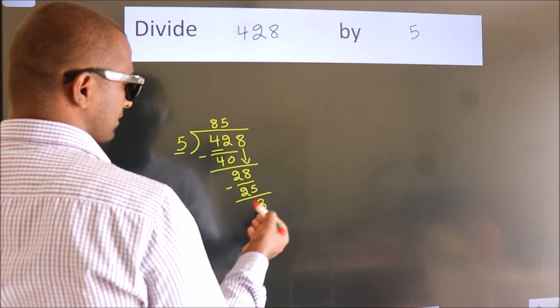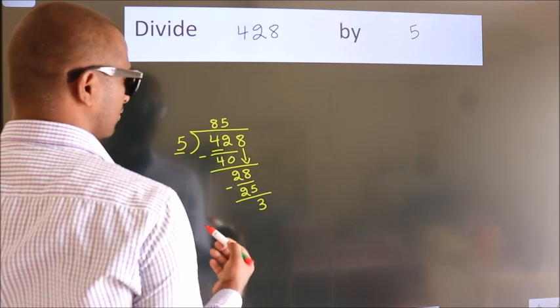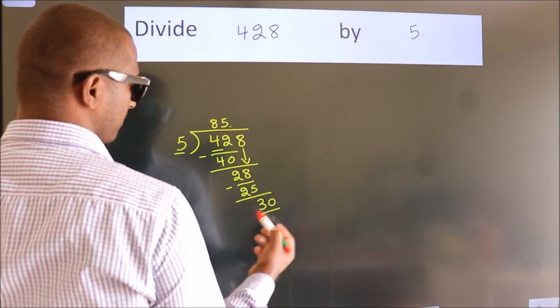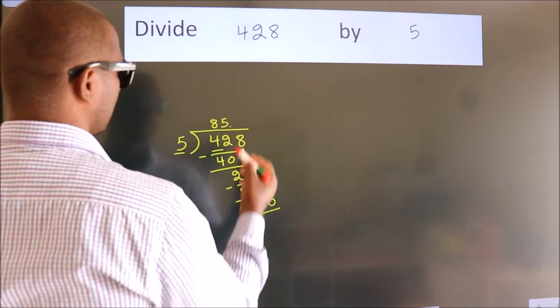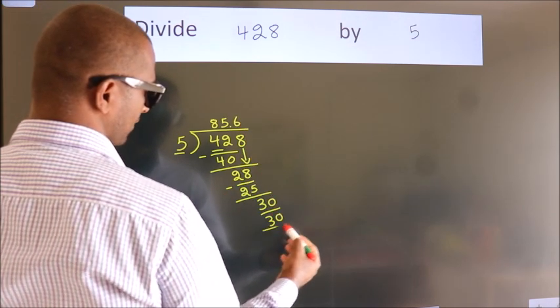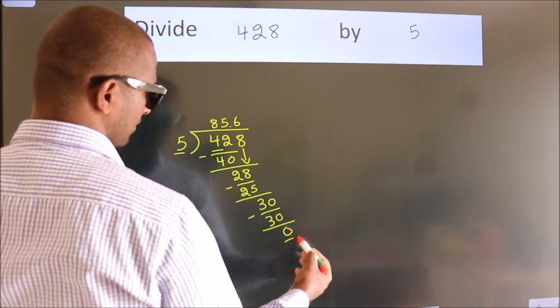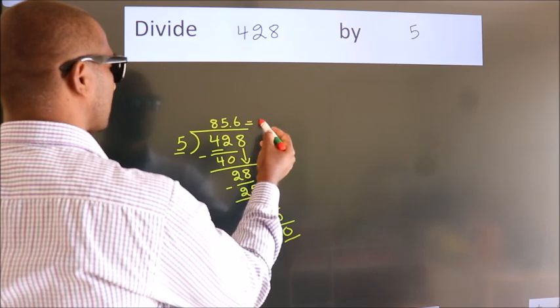After this, no more numbers to bring down. So what we do is put a dot and take 0. So 30. When do we get 30? In the 5 table, 5 times 6 is 30. Now we subtract. We get 0. We got remainder 0, so this is our quotient.